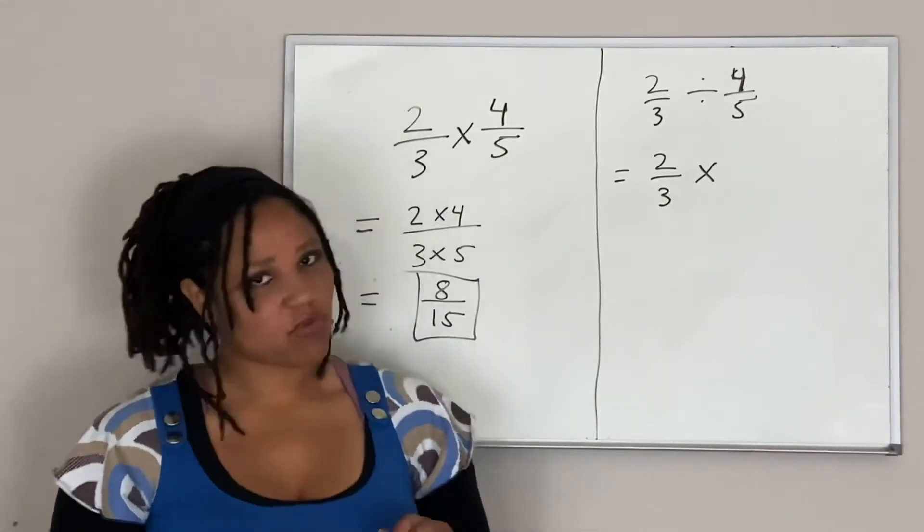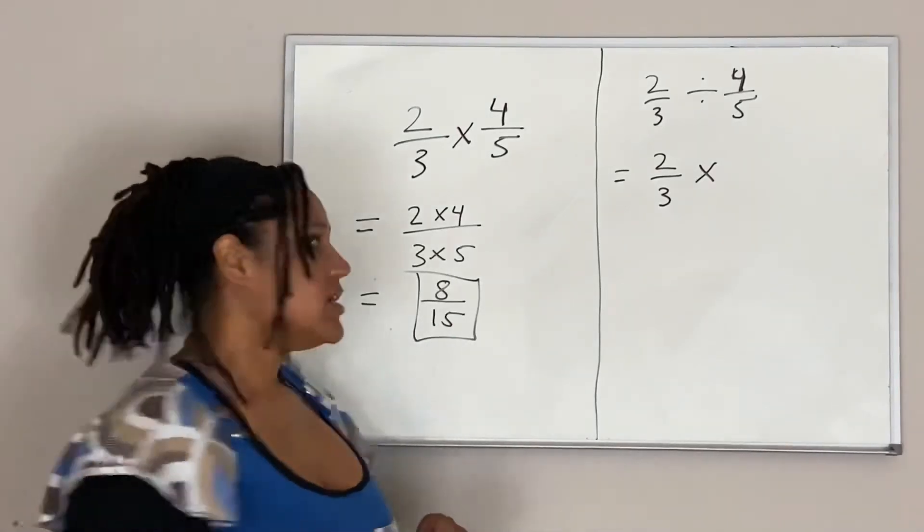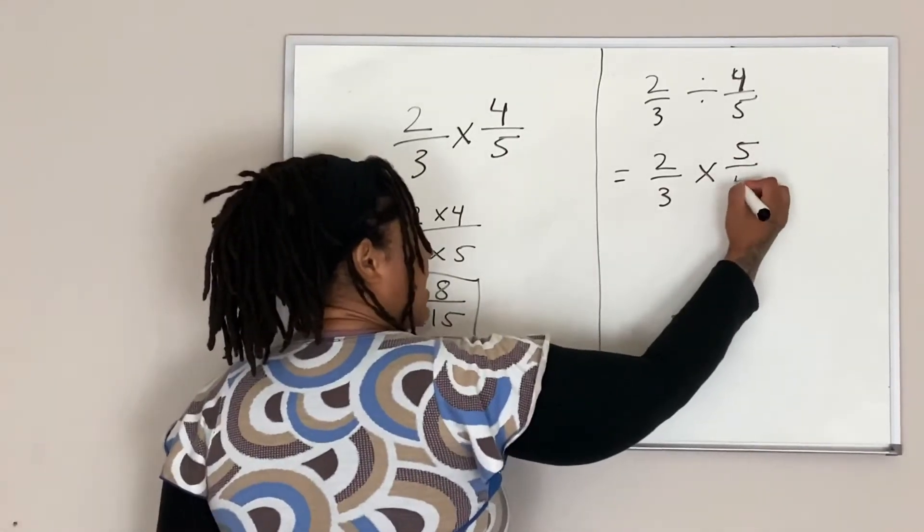What is the reciprocal of 4 over 5? The reciprocal of 4 over 5 is 5 over 4. So I'm going to go ahead and multiply 2 thirds by 5 over 4.